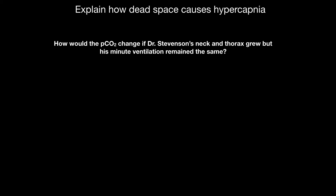His PCO2 is going up — but how can you explain that with the dead space problem? Remember, minute ventilation equals dead space ventilation plus alveolar ventilation. Because his neck and thorax grew but his minute ventilation was unchanged, his alveolar ventilation had to go down. And if your alveolar ventilation goes down — usually because of an increase in dead space — your PCO2 goes up.